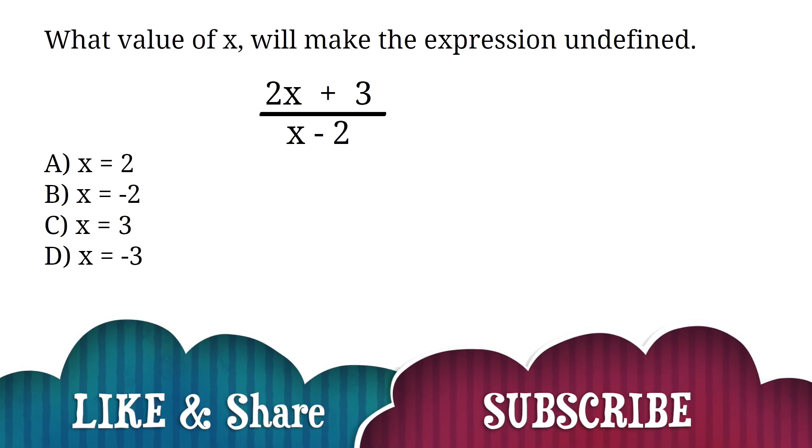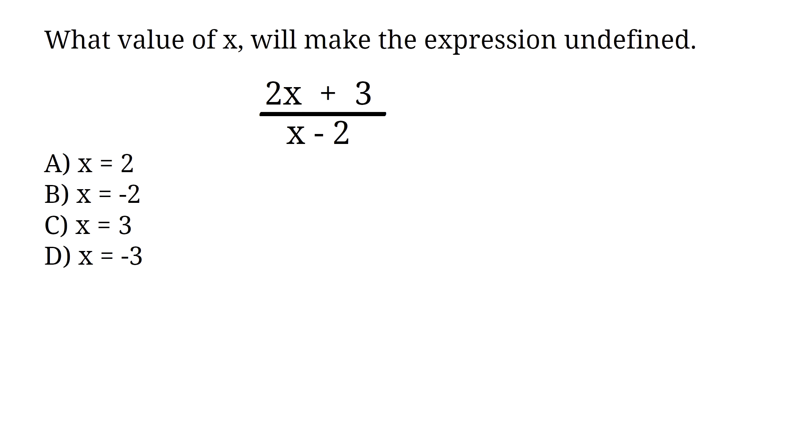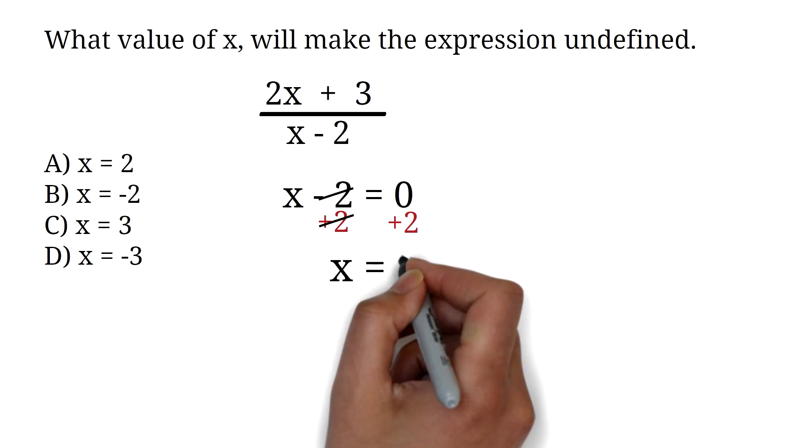What value of x will make the expression undefined? The expression is (2x plus 3) over (x minus 2). A, x equals 2. B, x equals negative 2. C, x equals 3. D, x equals negative 3. For this expression to be undefined, the denominator must equal 0. So we set x minus 2 equal to 0 and solve for x. Adding 2 to both sides, the 2 cancels out, giving us x equals 2. Therefore, the correct answer is A, x equals 2.